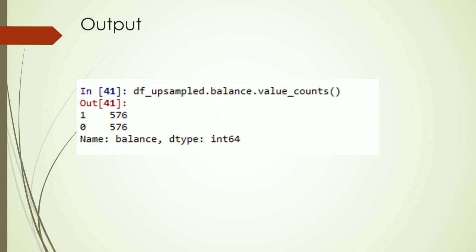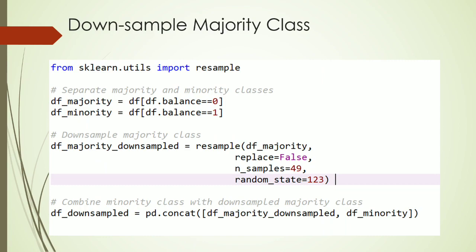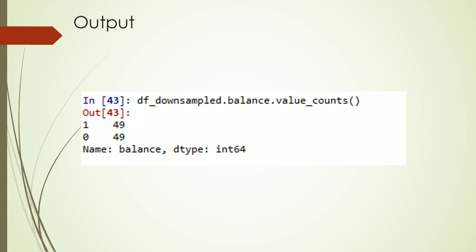The second technique is downsampling the majority class. We separate observations into different data frames, then resample the majority class without replacement, setting the number of samples to match the minority class. We combine the downsampled majority with the original minority class. Using similar code with resample, the counts become 49 and 49 — a perfectly balanced dataset that we can now use with any model.